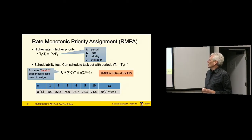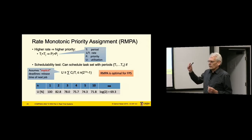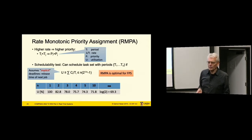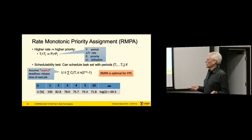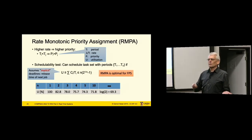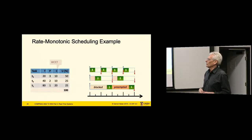Among fixed priority schemes, rate monotonic is optimal. But of course in general it's not optimal overall, because there are cases where things can be scheduled but not with fixed priorities.